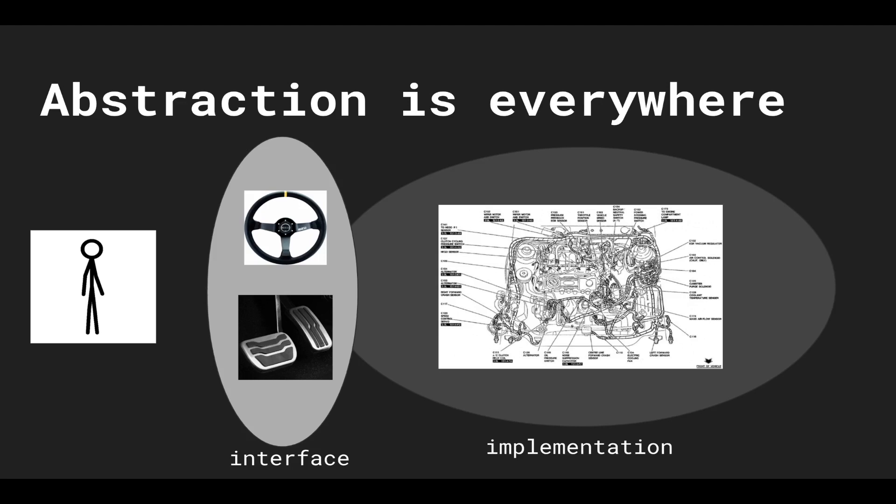So in this car example, the steering wheel and gas and brake pedals are an abstraction over the car engine. Abstraction hides complexity that's not important to us, so we can go about our lives in a better way.